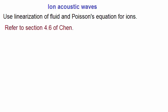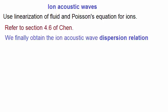We'll now carry out the same analysis that we did for electrons, but this time it's for ions. We can use the linearization procedure of the fluid and Poisson equations for ions in a similar treatment to that of the electrons. We won't go through the derivation here because it's very similar, with minor variations, but you can see this derivation in section 4.6 of Chen.